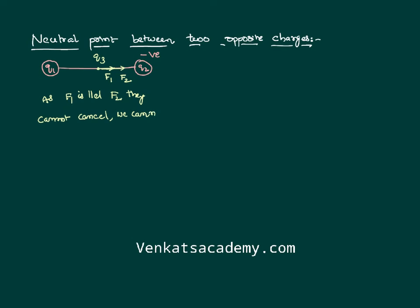Since f1 is parallel to f2, they cannot cancel each other. It is very clear that we cannot get a neutral point between the charges. Unlike two similar charges where we do get a neutral point between them, if the charges are opposite in nature, we are not going to get a neutral point between them.